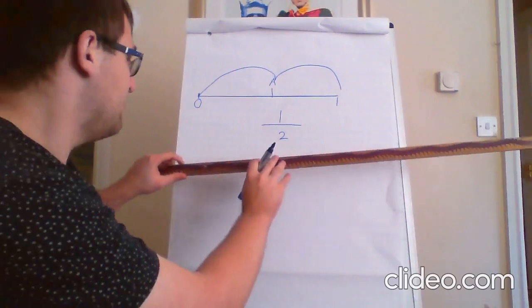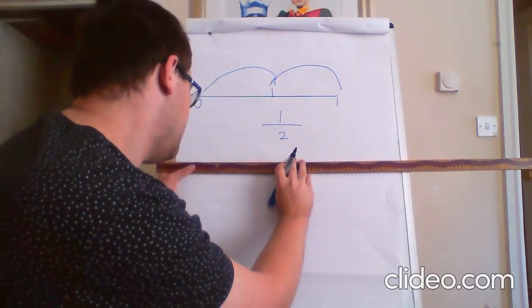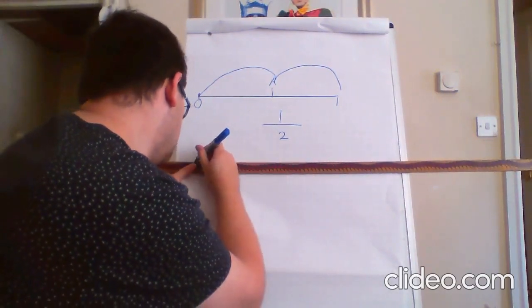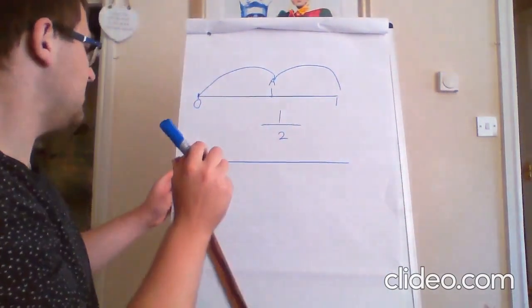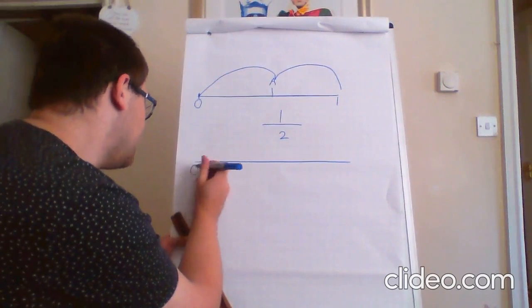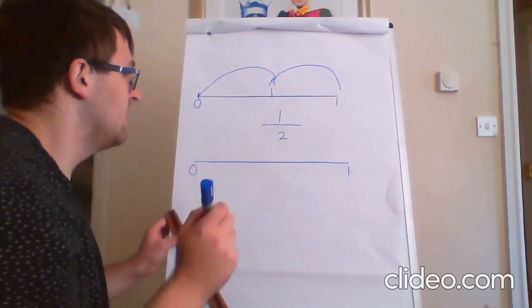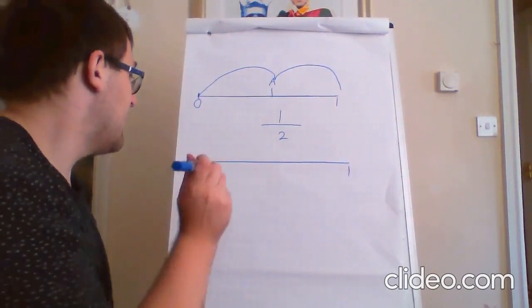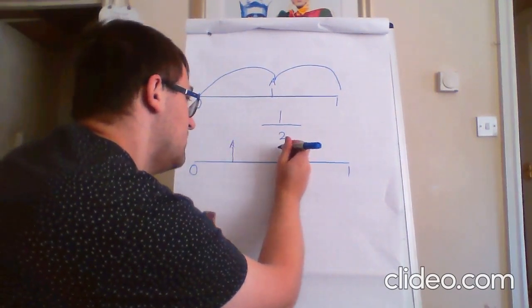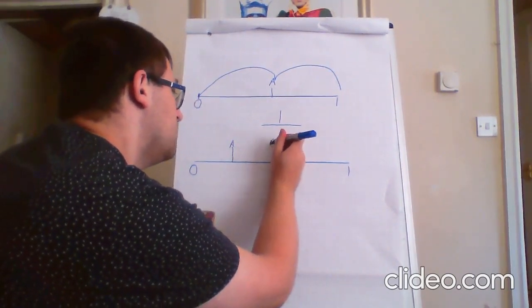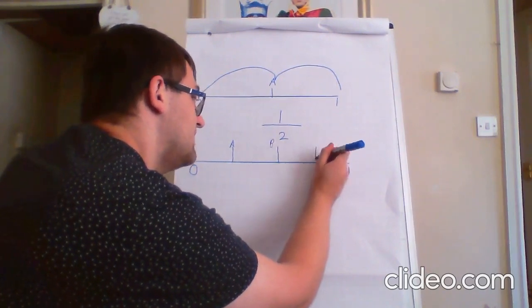Let's try it again with a bigger amount of fractions. Again, using my ruler to make sure it's nice and straight. Starting off at zero and one. So, this time I'm going to have A, B, and C.